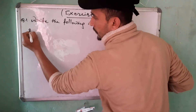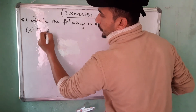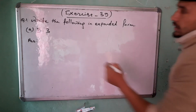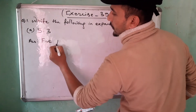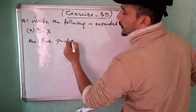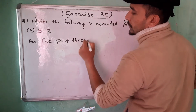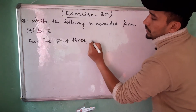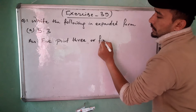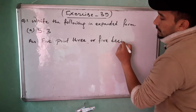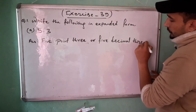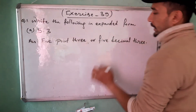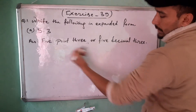Number A is 5.3. In expanded form, you can read it as 5.3. Or you can say 5.3. This is the expanded form. Instead of 'point', you can also write 'decimal'.